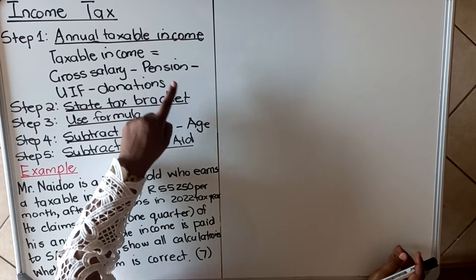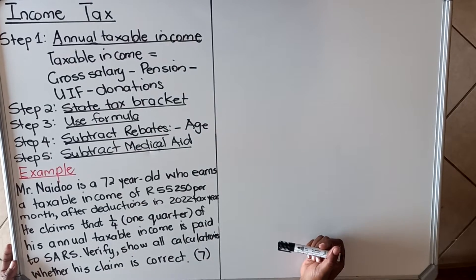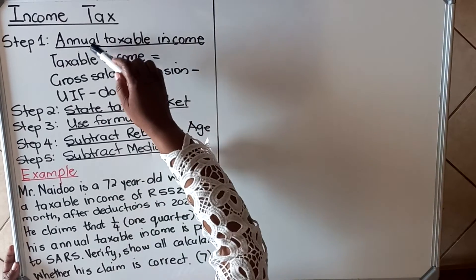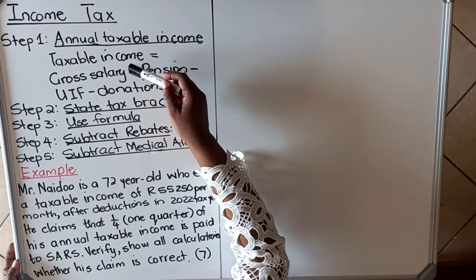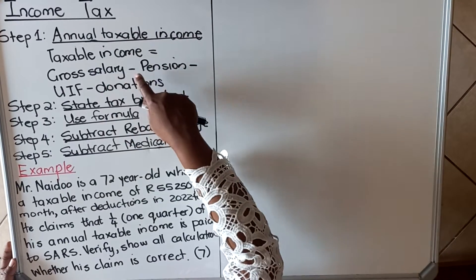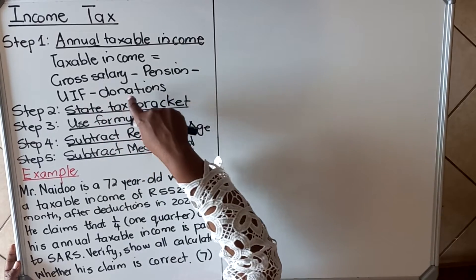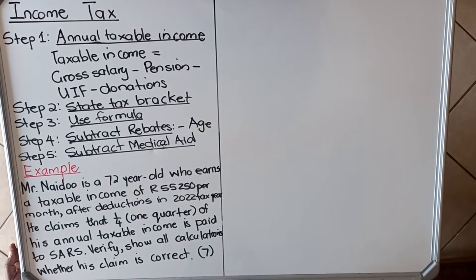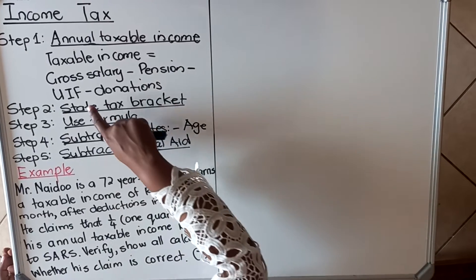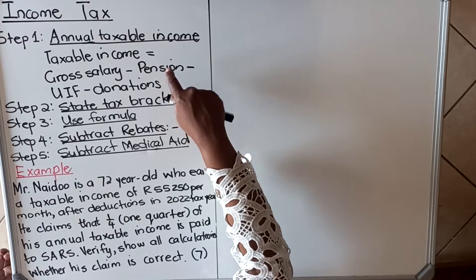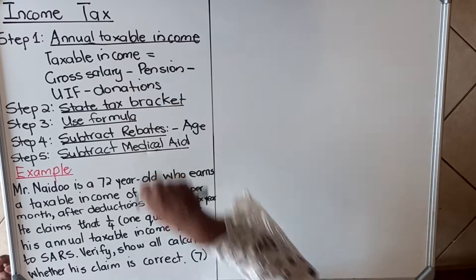The taxable income is important because it's calculated annually — so you must calculate the yearly taxable income. The taxable income is your gross salary minus pension, minus UIF, minus donation. Depending on the particular question, you must look for whether you have pension, UIF, or donation to subtract, and what's left will be your taxable income.